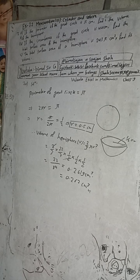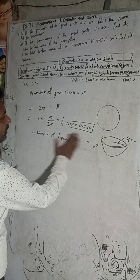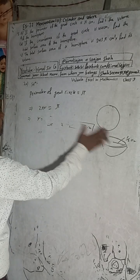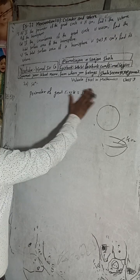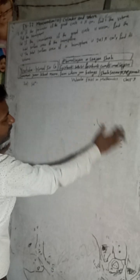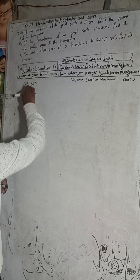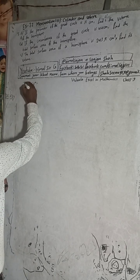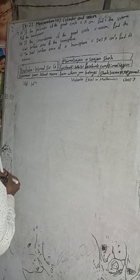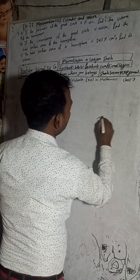Now moving to the 7B solution. The question is: if the circumference of the great circle is 44 cm, find the total surface area of the hemisphere. This is a hemisphere.